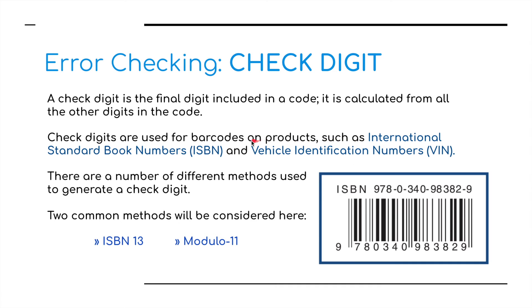Check digits are used for barcodes on products, and for things such as international standard book numbers, or ISBN numbers, and vehicle identification numbers. These are unique numbers to the book, to the product, to a car. There are a number of different methods, but the book mentions two common methods: ISBN 13 and Modular 13. There's an example of an ISBN barcode shown here.